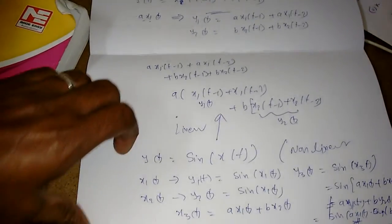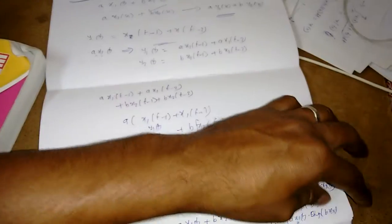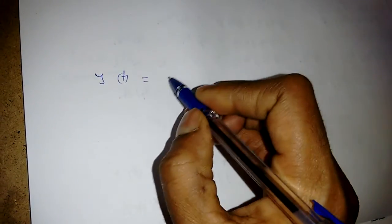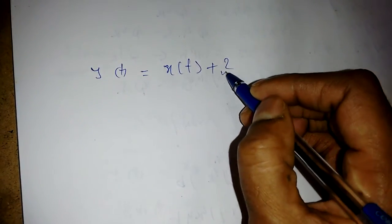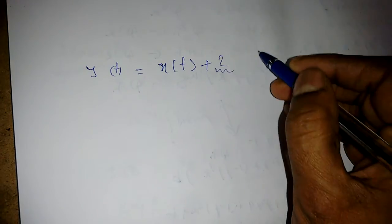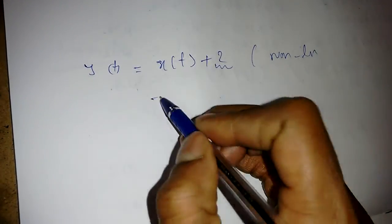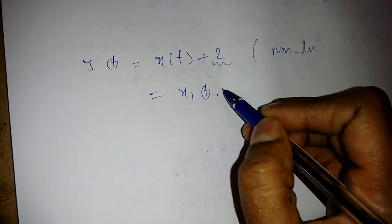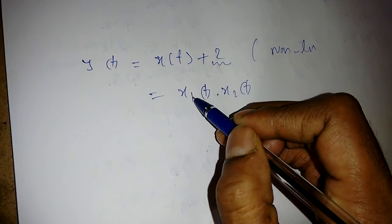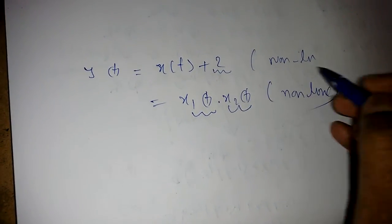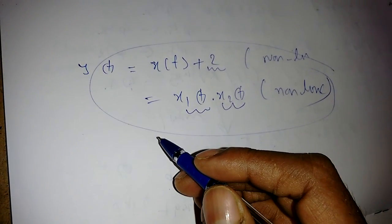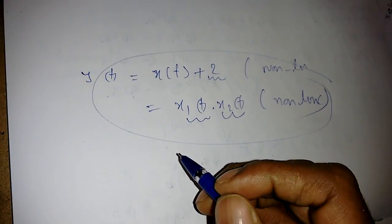There is also a quick identification method: if you see a constant term added to x(t), or a multiplication like x₁(t)·x₂(t), the system is immediately nonlinear. You can easily identify which systems are linear and which are nonlinear this way. The next property will be discussed in the next video.